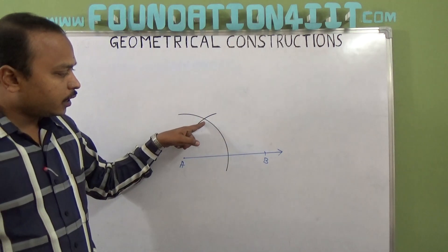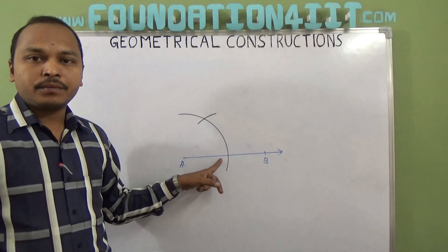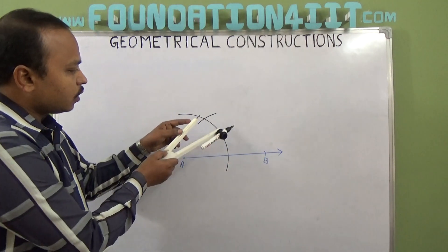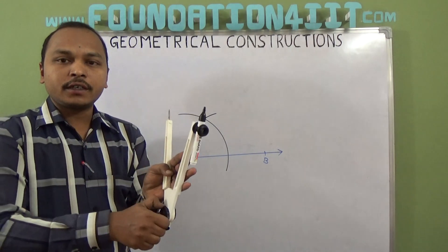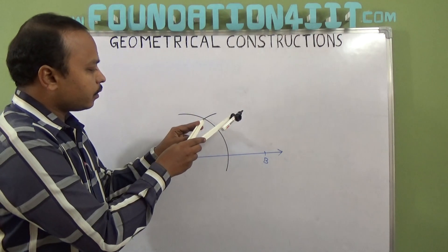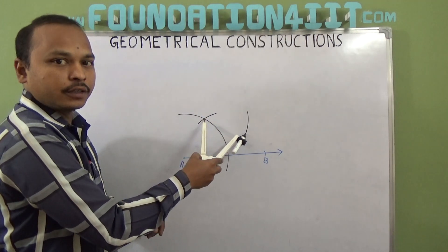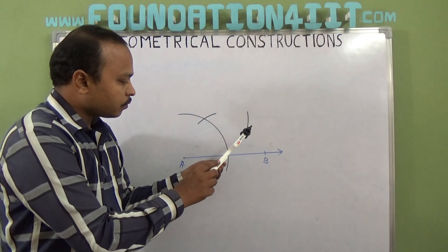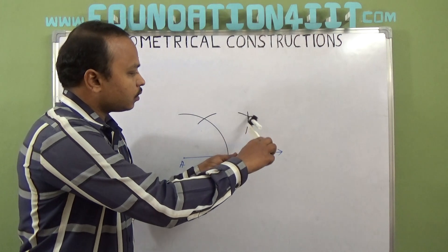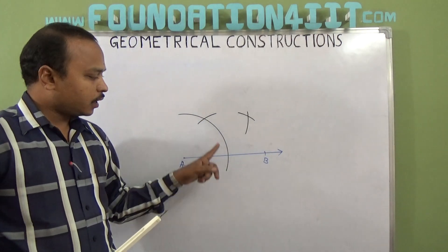Now this is the 60 degree mark and this is the zero degree mark. These both I have to bisect now by angle bisecting. So from here take any radius and fix that. From here draw an arc, and same radius from the other point also draw an arc.